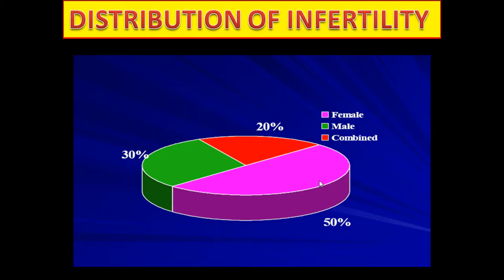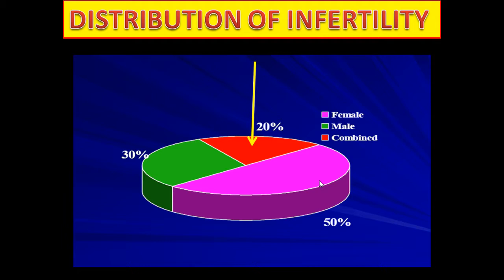Distribution of infertility: 50% of the cases are female, 30% of the cases are male, and 20% of the cases are combined male and female.